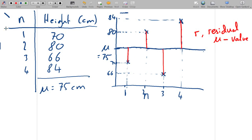So in this case, we have a mean of 75 minus 70, so the residual is 5. In this case, we have a mean of 75 minus 80, so the residual is minus 5.